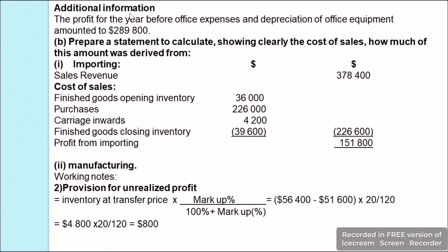Additional information states that profit for the year before office expenses and depreciation of office equipment amounted to $289,800. Part (b) of the question asks us to prepare a statement showing clearly the cost of sales and how much profit was derived from importing.